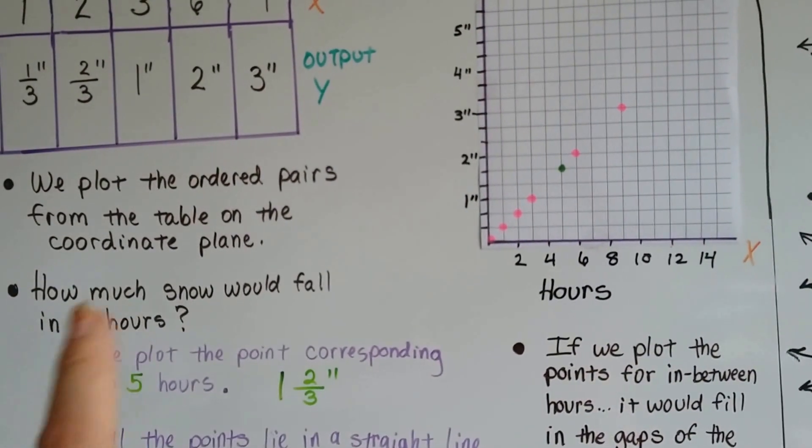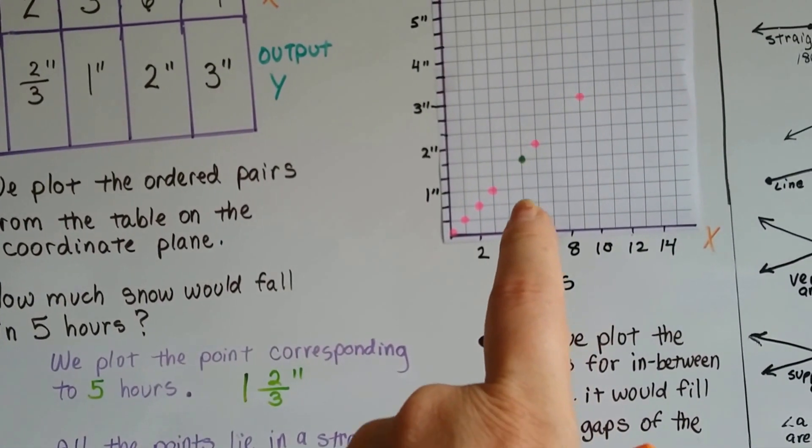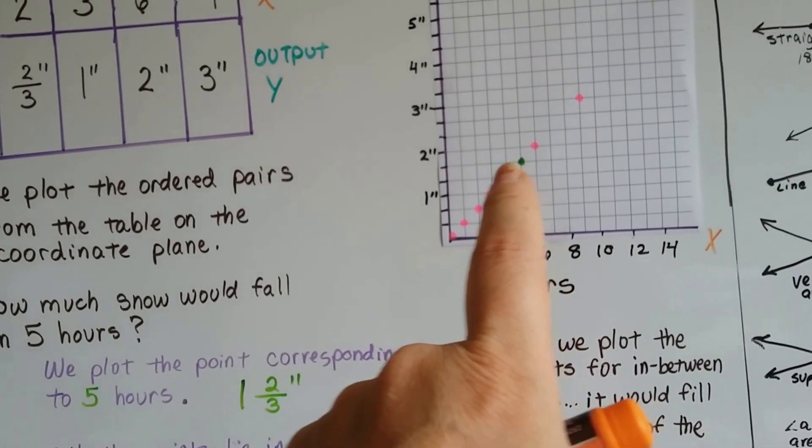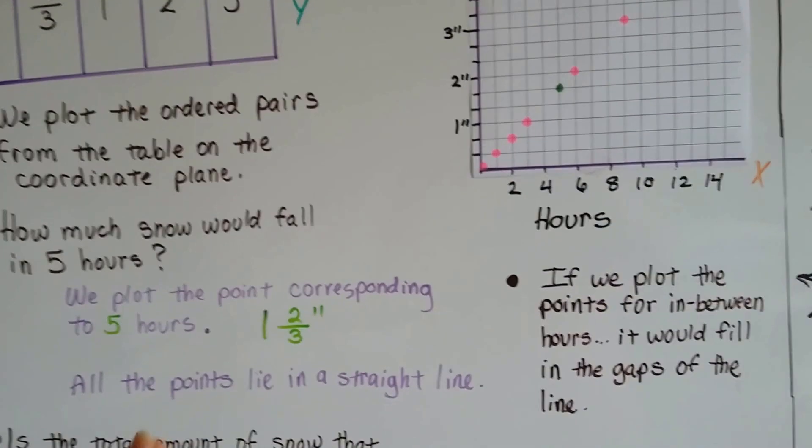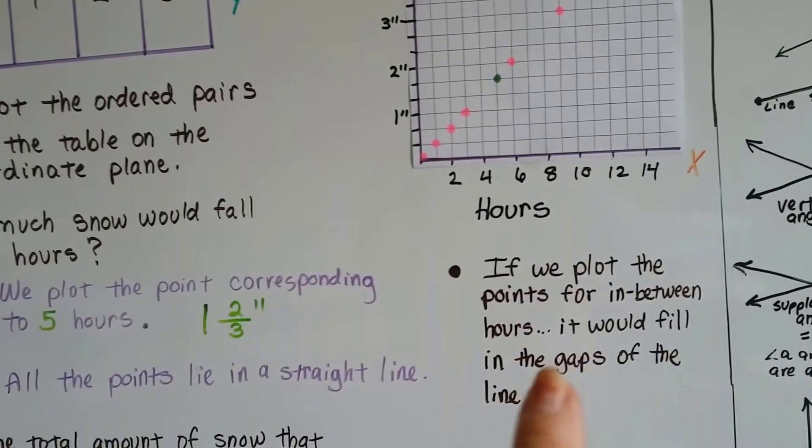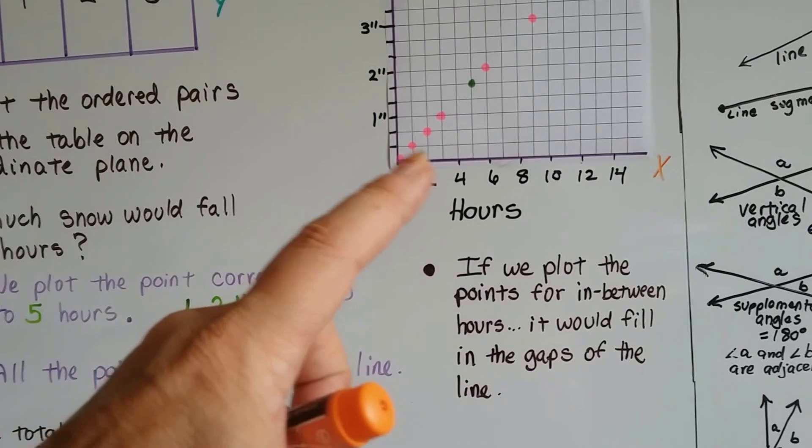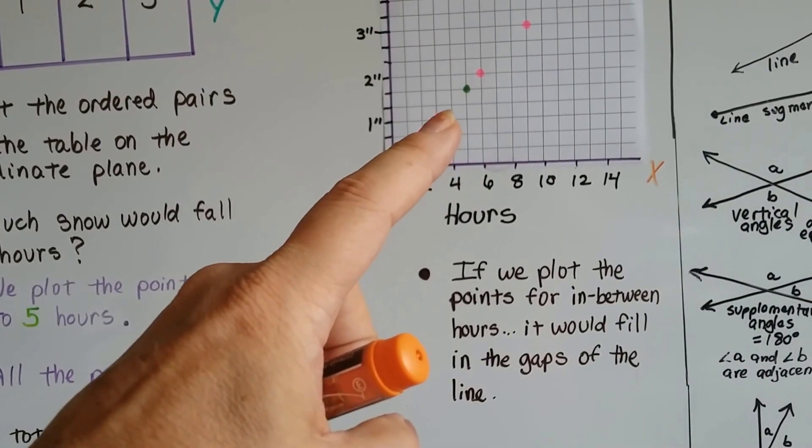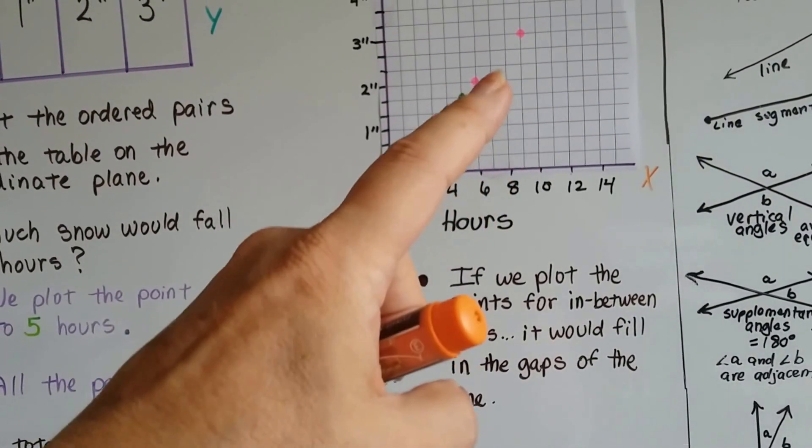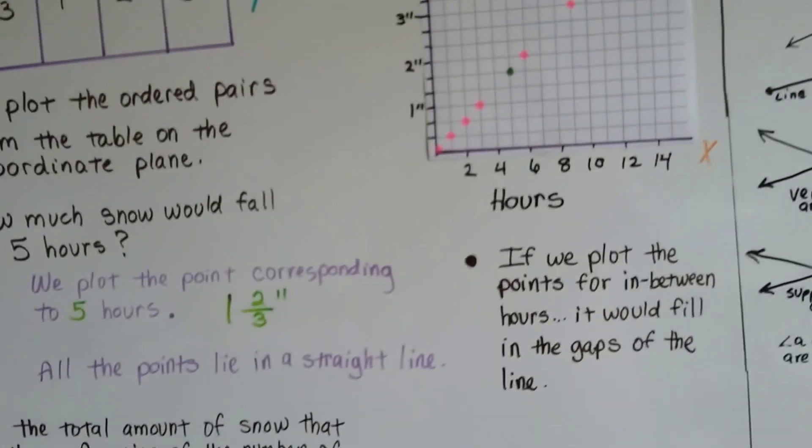How much snow would fall in 5 hours? So, here's in between 4 and 6. That would be 5. We follow it up and we can see it would be 1 and 2 thirds inches. All the points lie in a straight line. If we plot the points for in between the hours, it would fill in the gaps of the line. 4 would be 1 and a third. You can see where each one would be and it would just make this nice straight line.